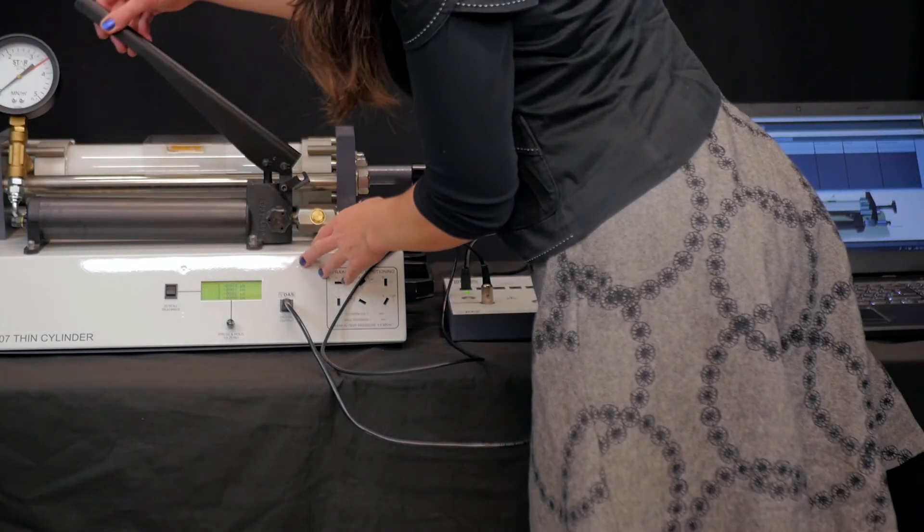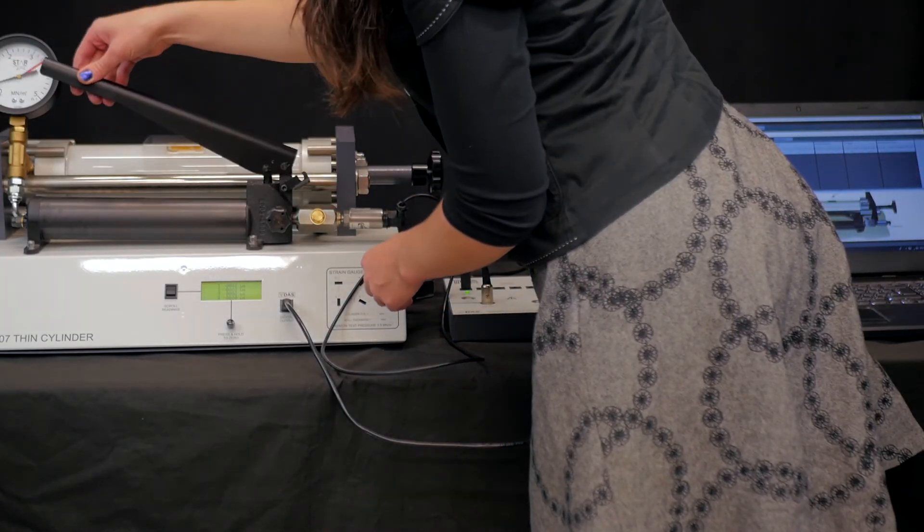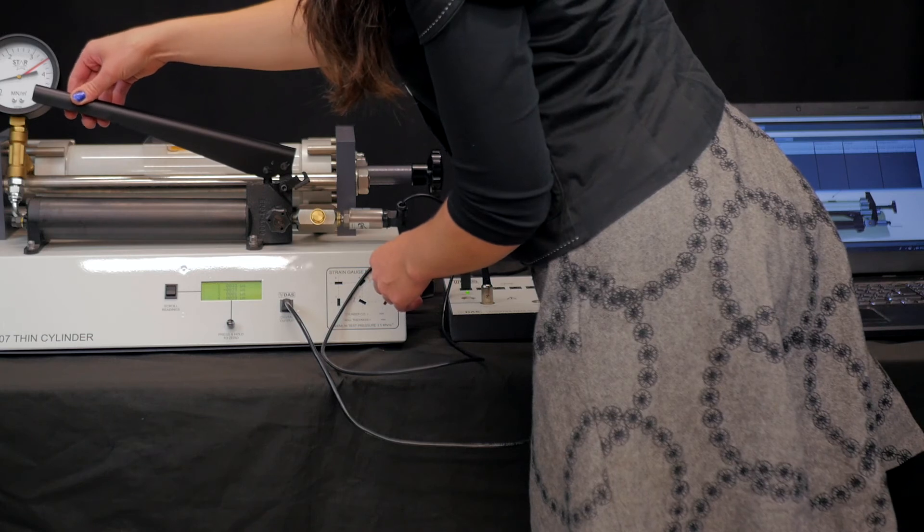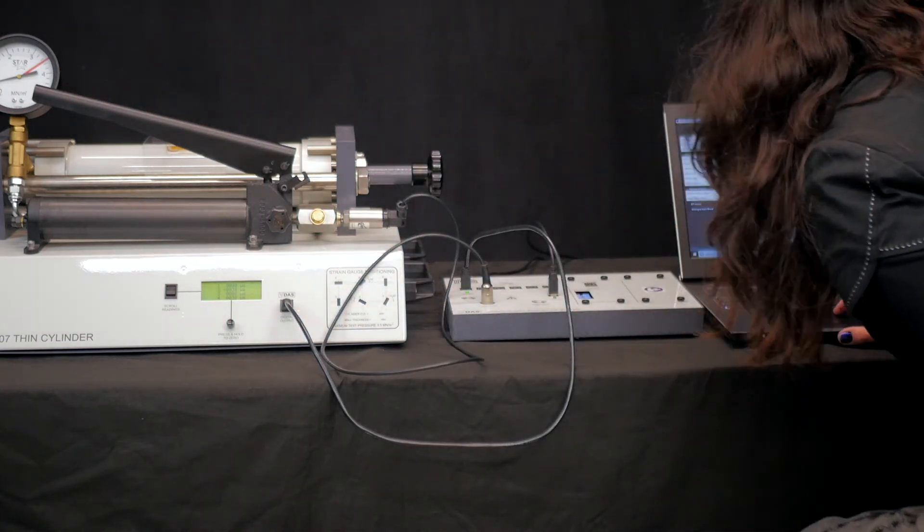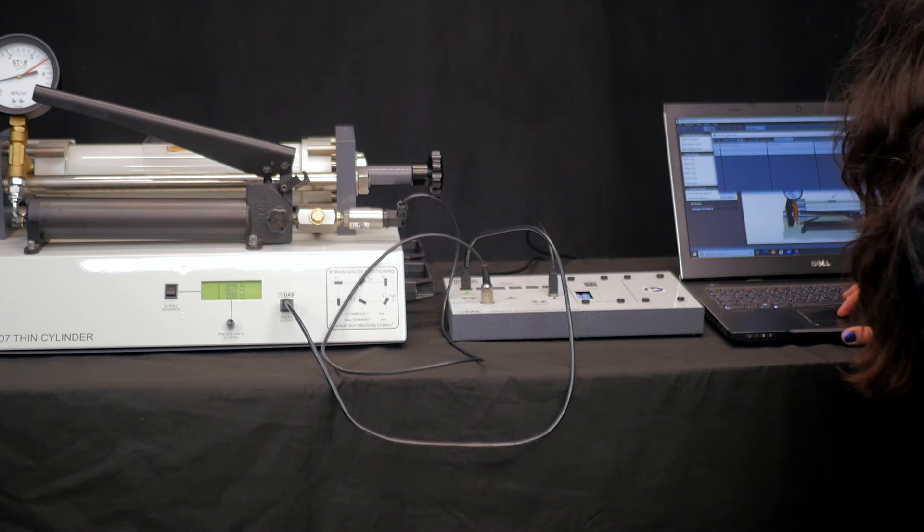Then we scroll through the readings of all six strain gauges and put them in the table if you're doing it manually, or click the button on VDAS to record the data point. This is where we use the pump to increase the pressure to approximately 0.5 mega newtons per square meter. You wait a few seconds for the readings to stabilize and then record them either in your manual table or using VDAS.